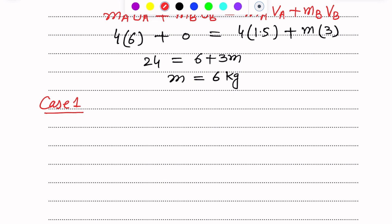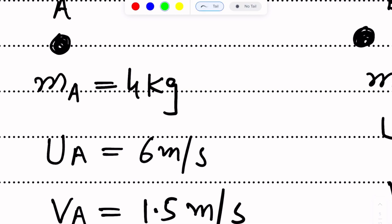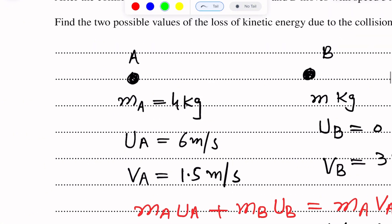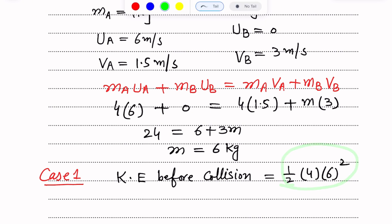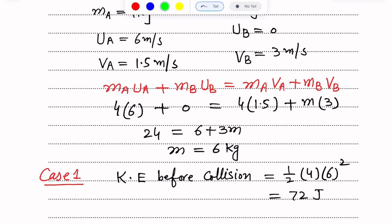Finding the loss of kinetic energy. Kinetic energy before collision is ½mv². Taking the mass of particle A and initial speed of particle A: ½ × 4 × 6² = 72 joules. This is the kinetic energy before the collision.